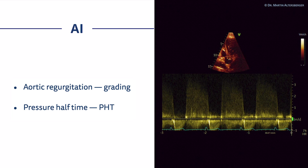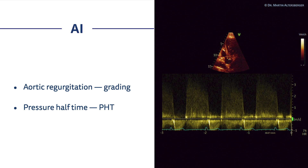For aortic regurgitation, we can grade it with the pressure halftime — you measure from one point to another to get several measurements, though it's not always easy. You need a good aortic regurgitation signal in the continuous wave Doppler spectrum. If the pressure halftime is above 500 milliseconds, it's most likely mild regurgitation; between 200 and 500 milliseconds is moderate; and shorter than 200 milliseconds suggests severe aortic regurgitation. If the curve is really steep, keep in mind you need a high-quality signal — otherwise the measurement will be off.